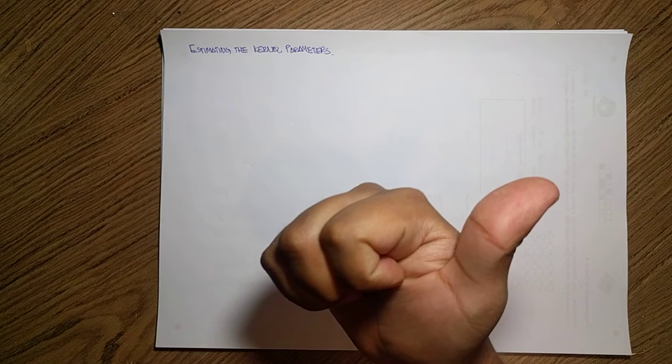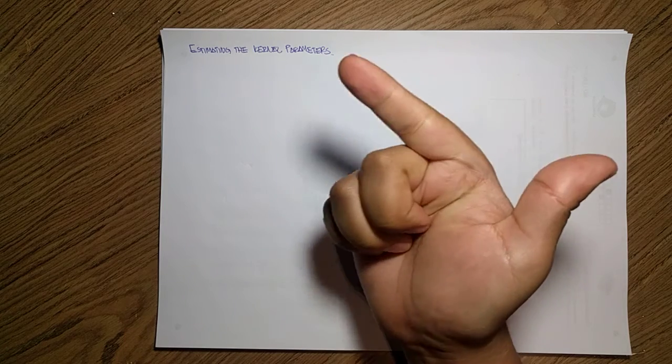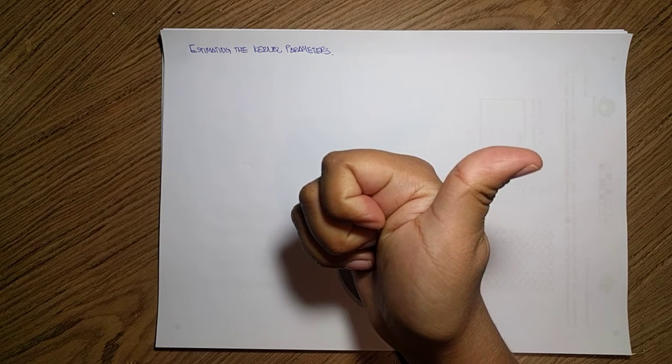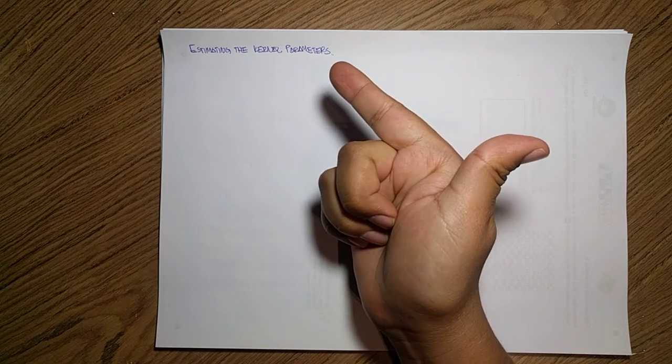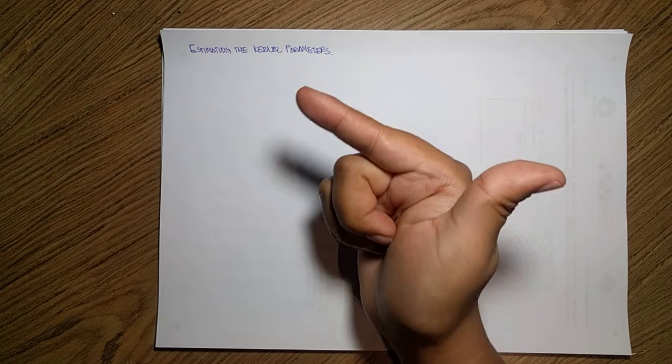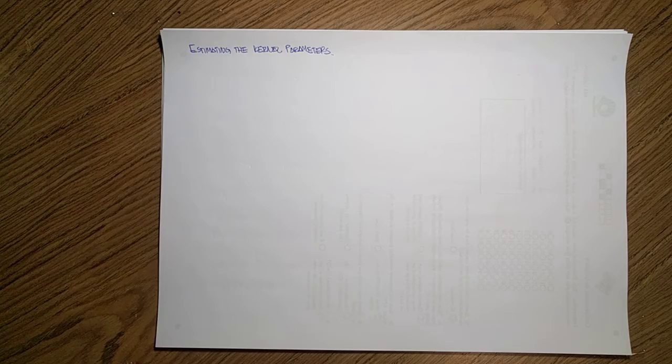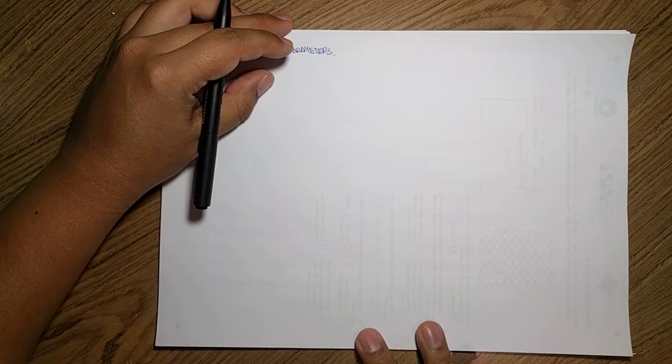What we're going to talk about now is how to do estimation over the parameters of the Gaussian process. If you recall, the only thing that may have parameters inside is the kernel, because the mean comes from the data and the covariances depend on this kernel that we decide. So that is one of the things we need to optimize here.